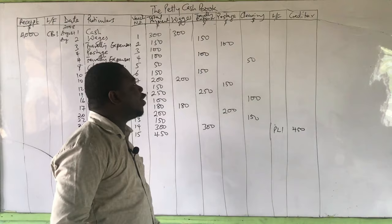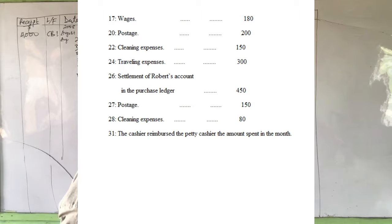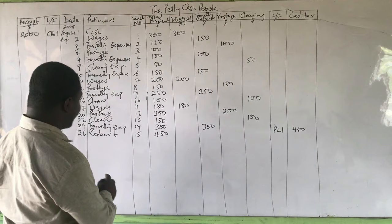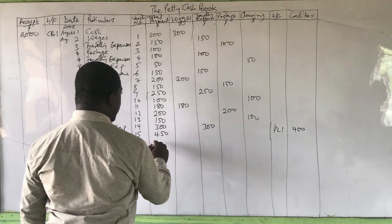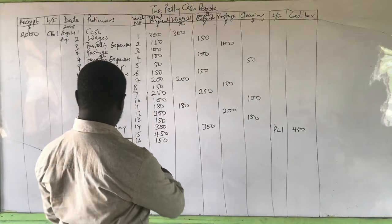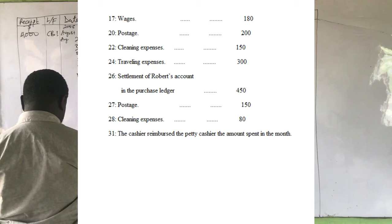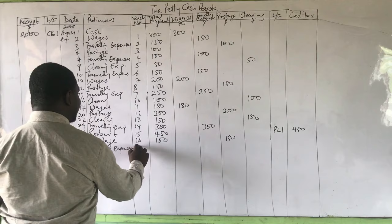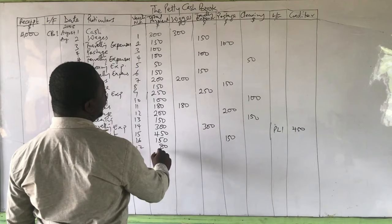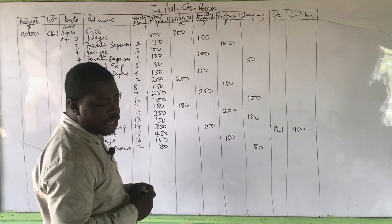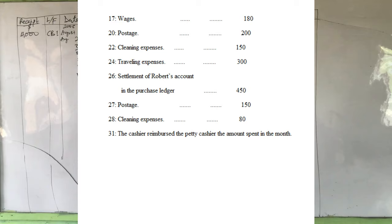August 26th — settlement of Robert's account in the purchases ledger, $450. This is a creditor payment, which is why we created a creditor column. The name is Robert, voucher number 15, $450. Extend to the creditor column. Under the ledger folio attached to the creditor column, put PL1 — purchases ledger — just as in the journals. August 27th — postage $150, voucher number 16; extend to postage column. August 28th — cleaning expenses $80, voucher number 17; extend to cleaning column.